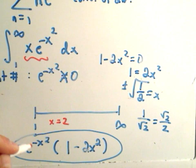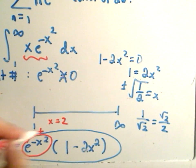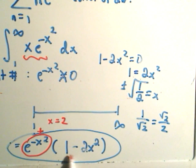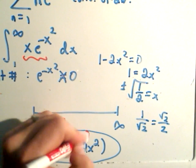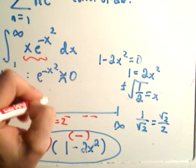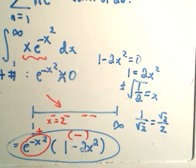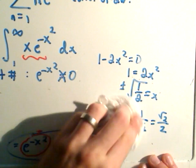If you plug in x equals 2, again, notice e to the negative x squared. That's always positive. On the part over here, we'll get 1 minus, what, 8. That's going to give us a negative number. So certainly it's negative over this interval, which means the function is decreasing. Whew! Okay, so the second condition is also satisfied.